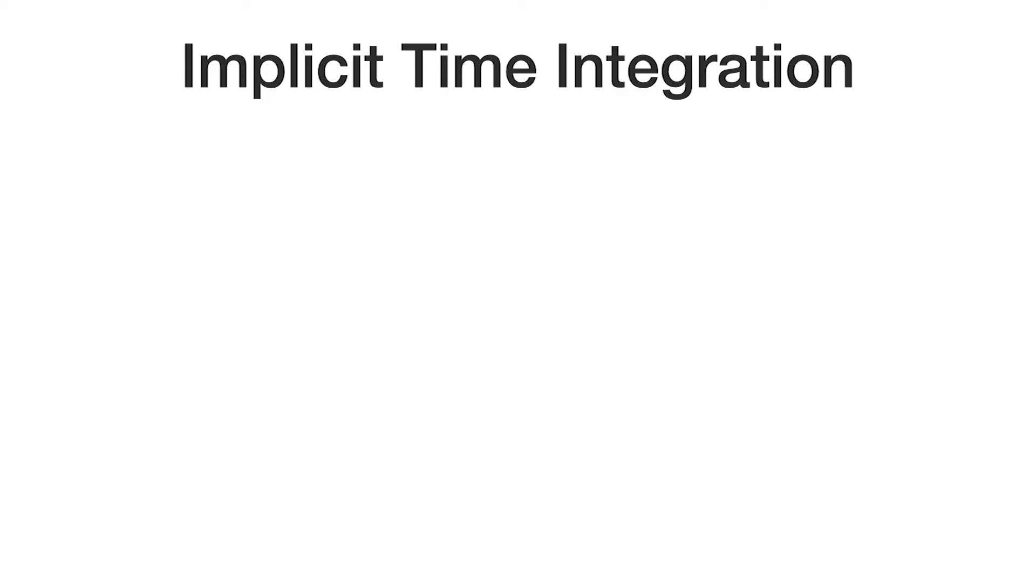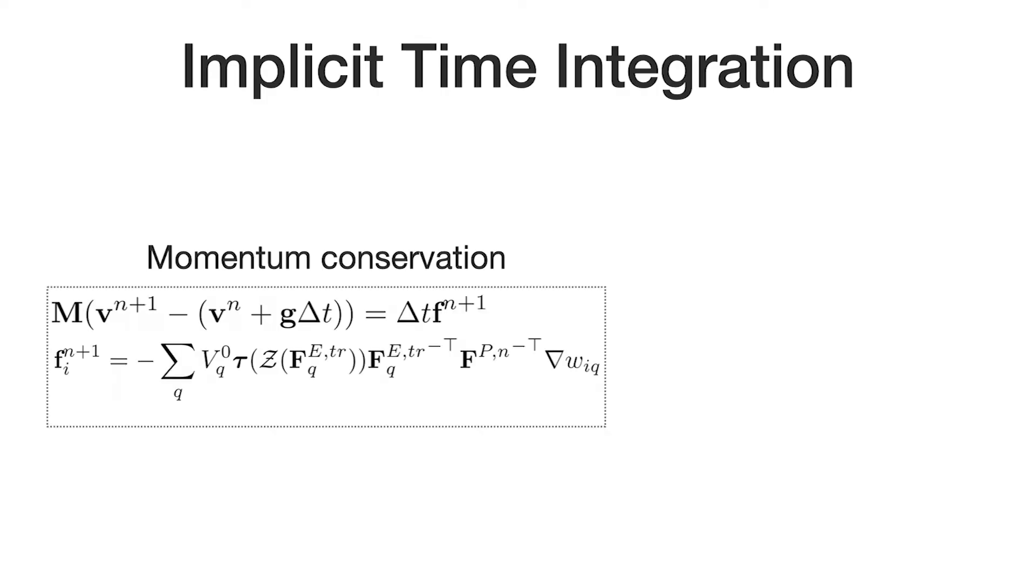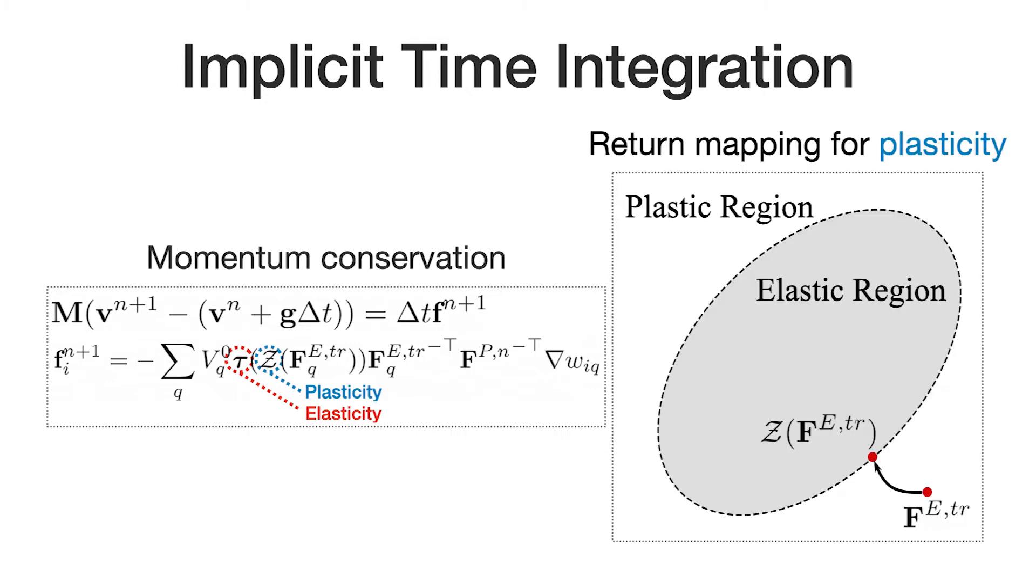For time-stepping with the implicit Euler time integration rule, one needs to solve a nonlinear system of equations. Here, tau is the elastic Kirchhoff stress and z is the plastic return mapping, which projects the deformation gradient outside the elastic region back onto the boundary.